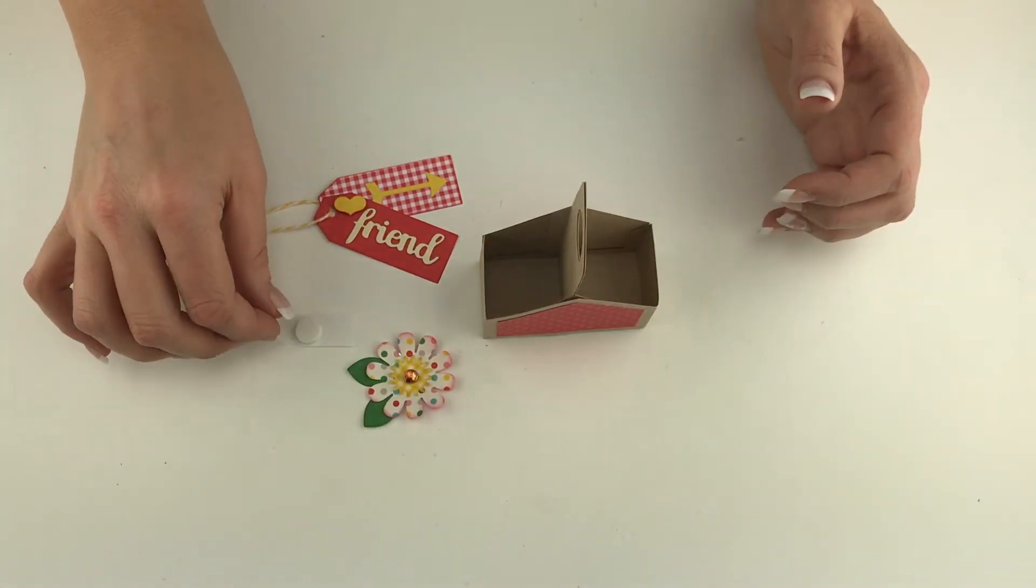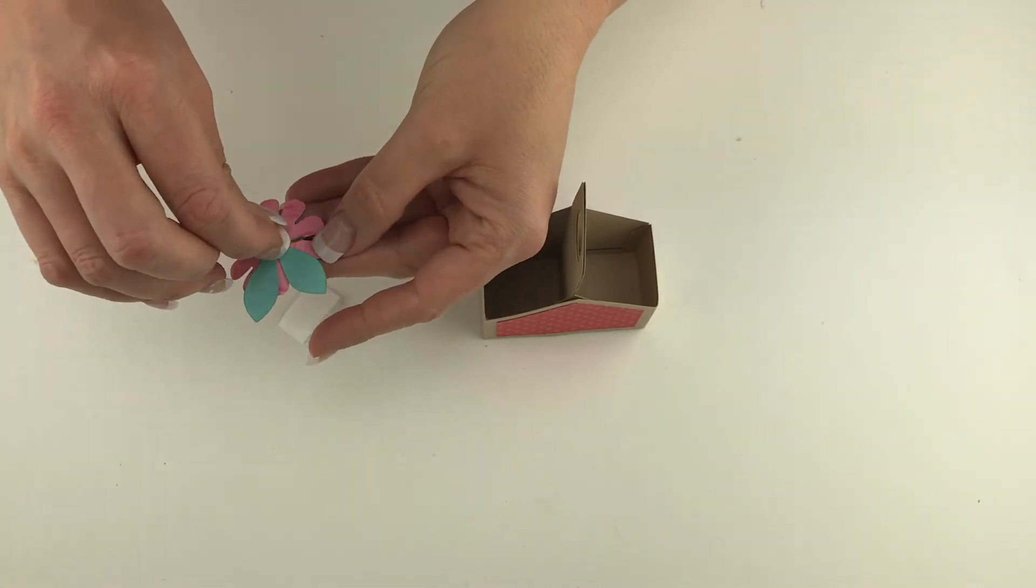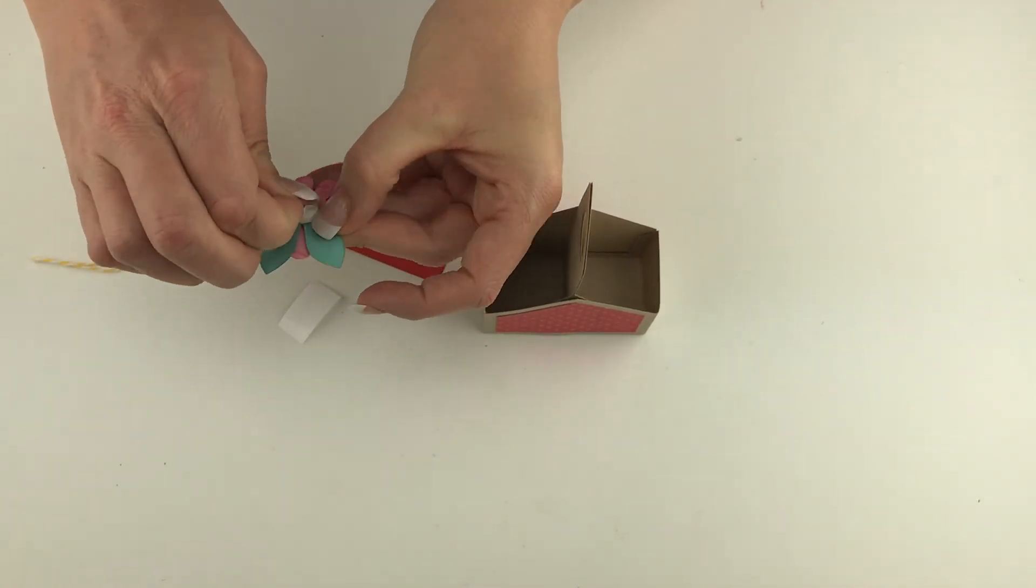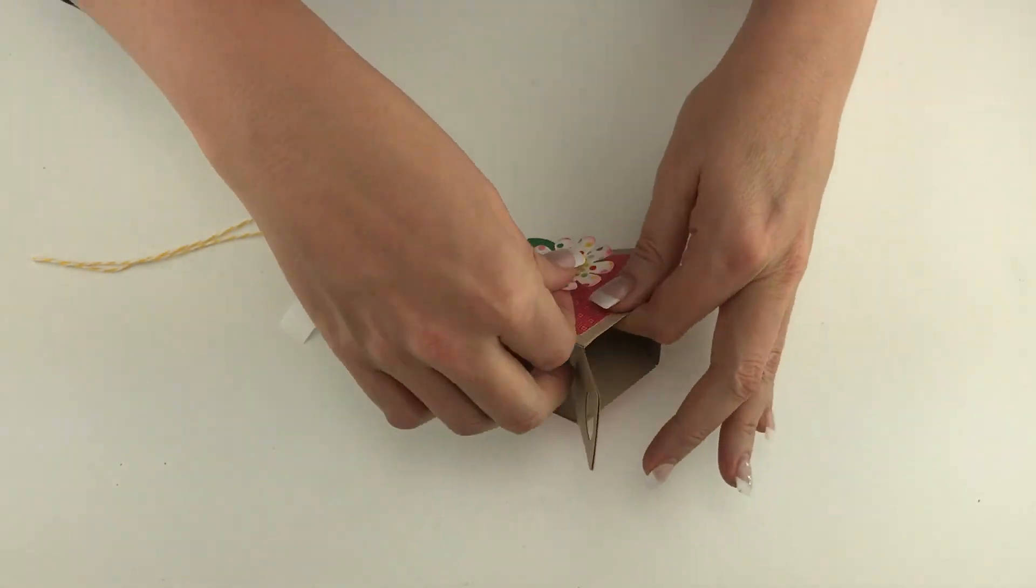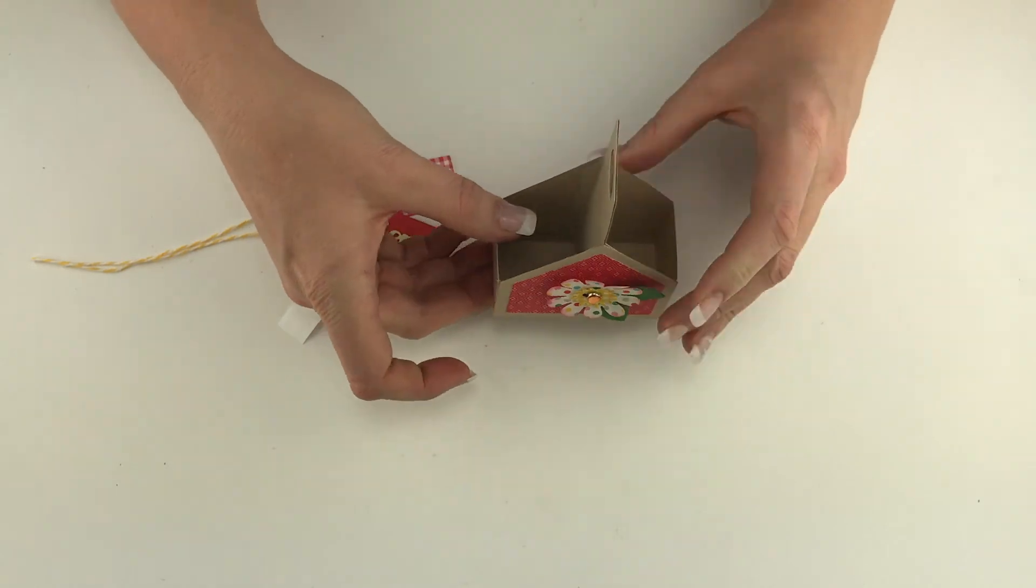Now we just need to add our embellishments to our tote. I'm going to use a little pop dot here on the back of our flower and I'm just going to stick that right on the side of our tote. Look how cute that is.